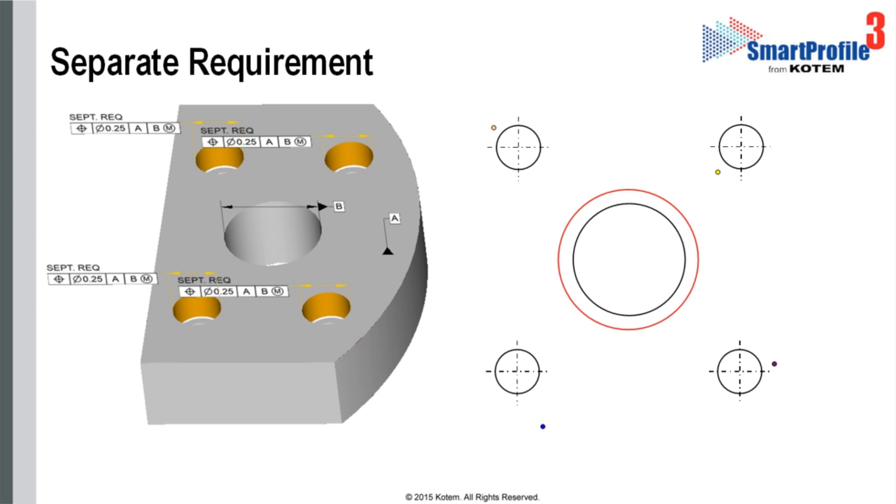Now let us consider the separate requirements case. The model is the same except for the notation separate requirements above the feature control frame. This time, the different points are colored differently to remind us that they need to fulfill the FCF requirements separately.